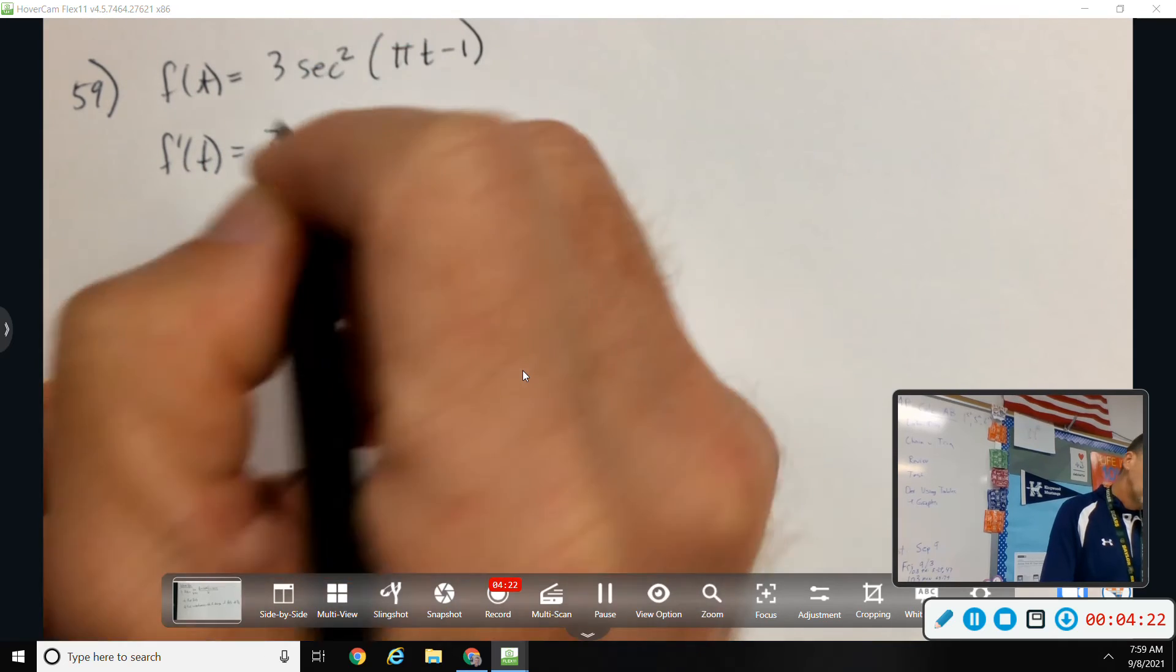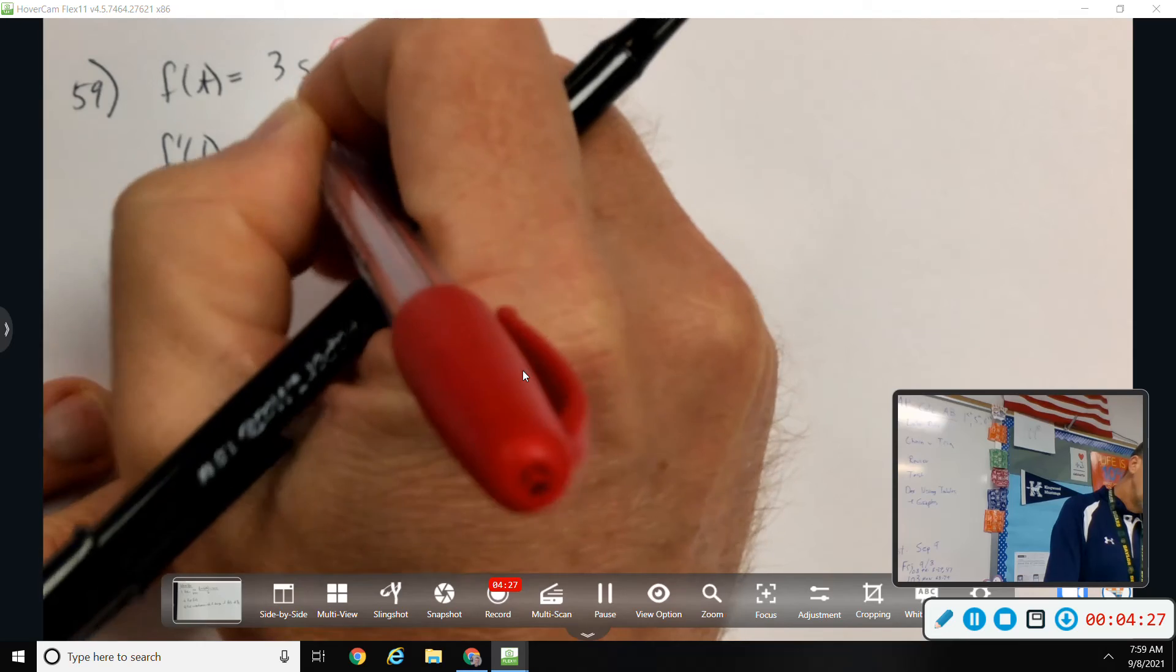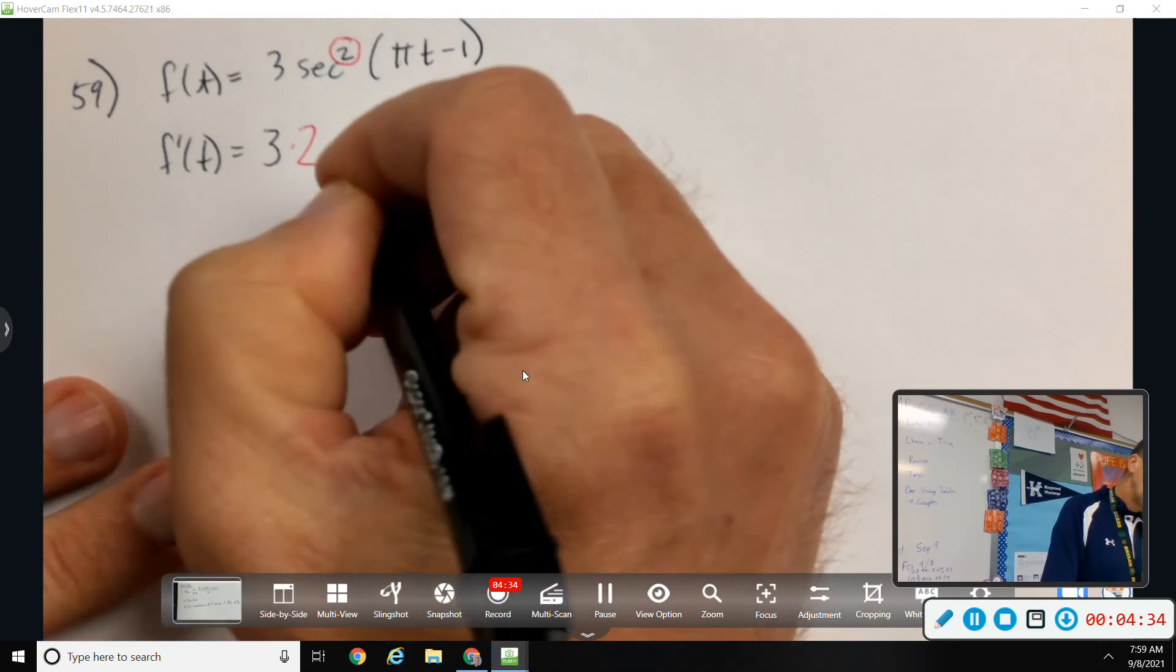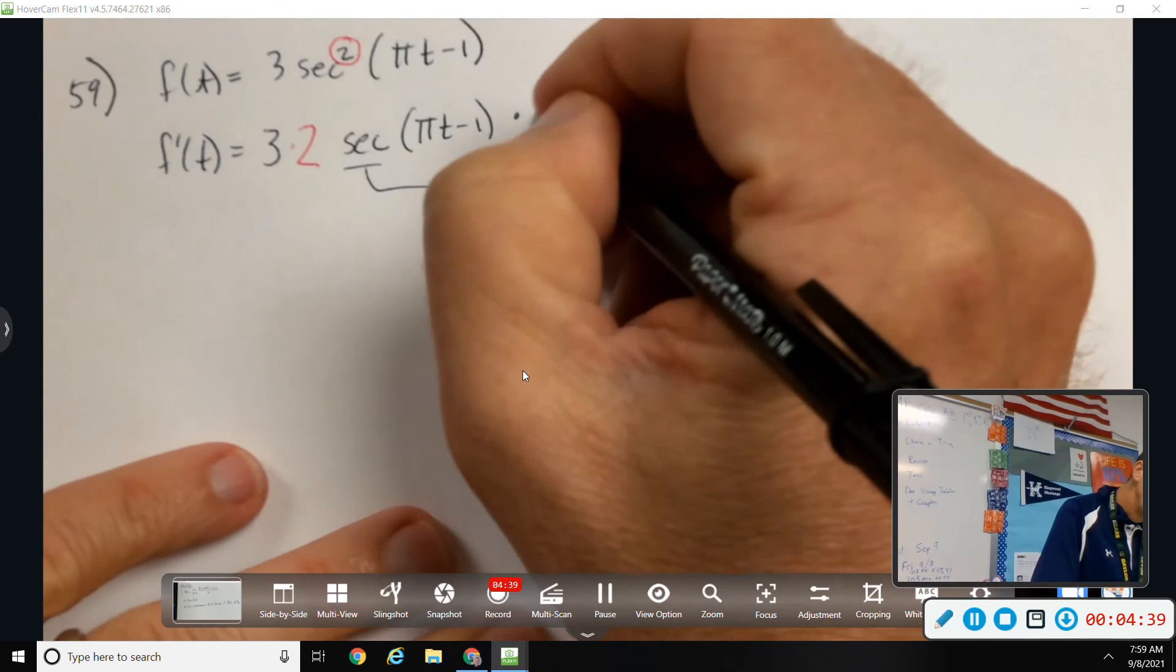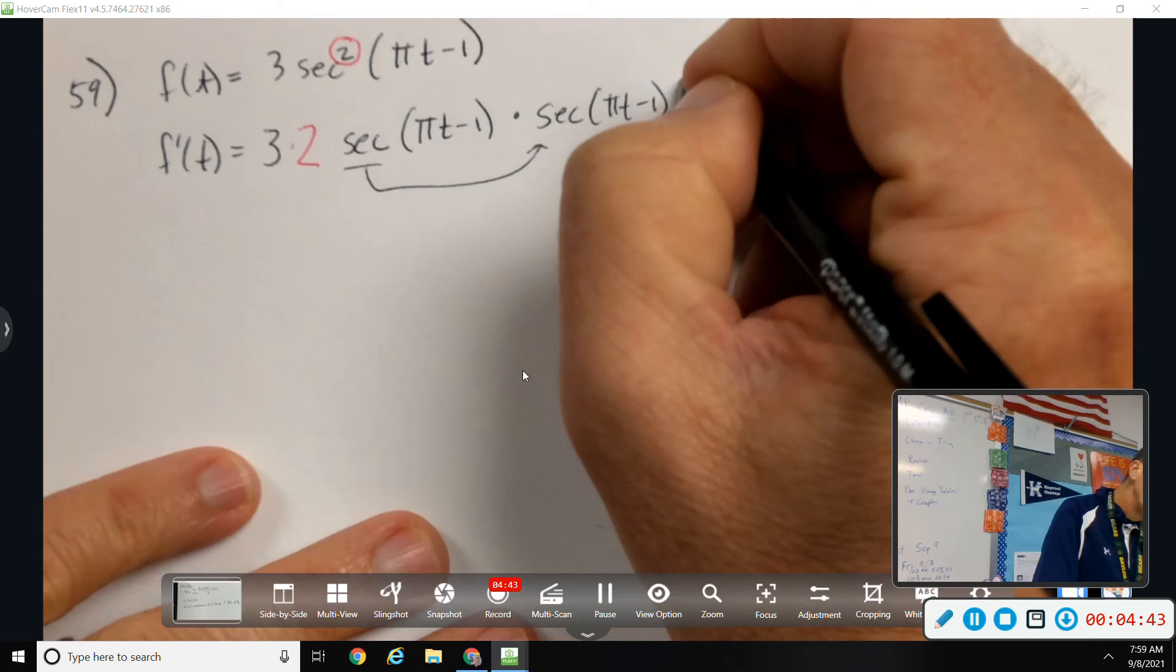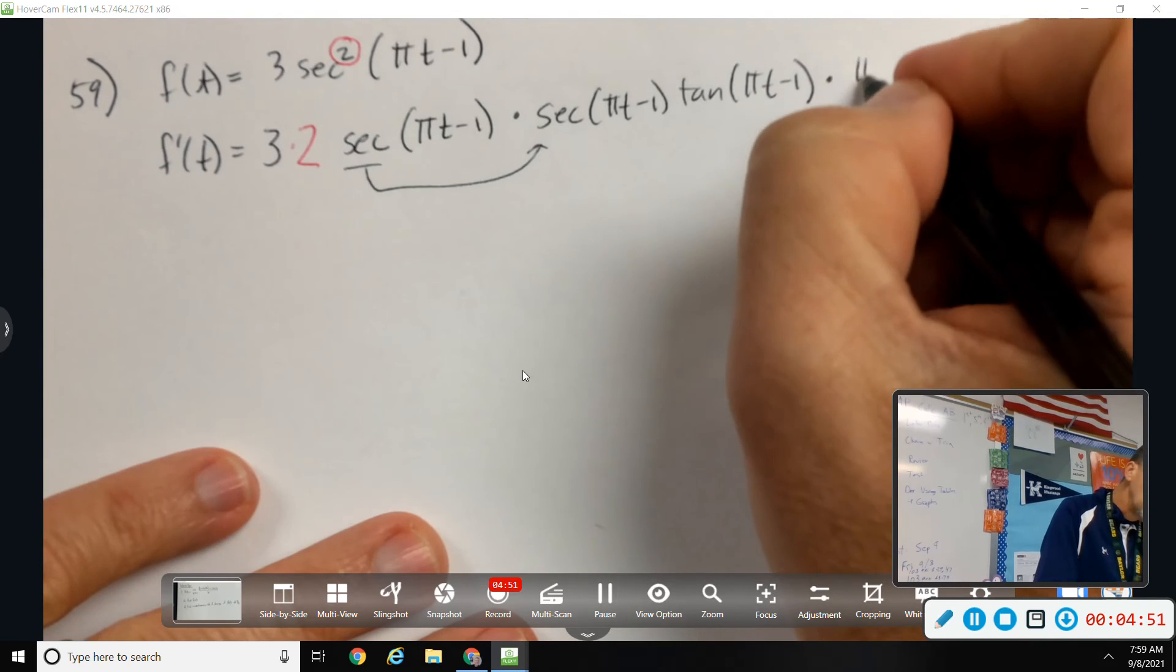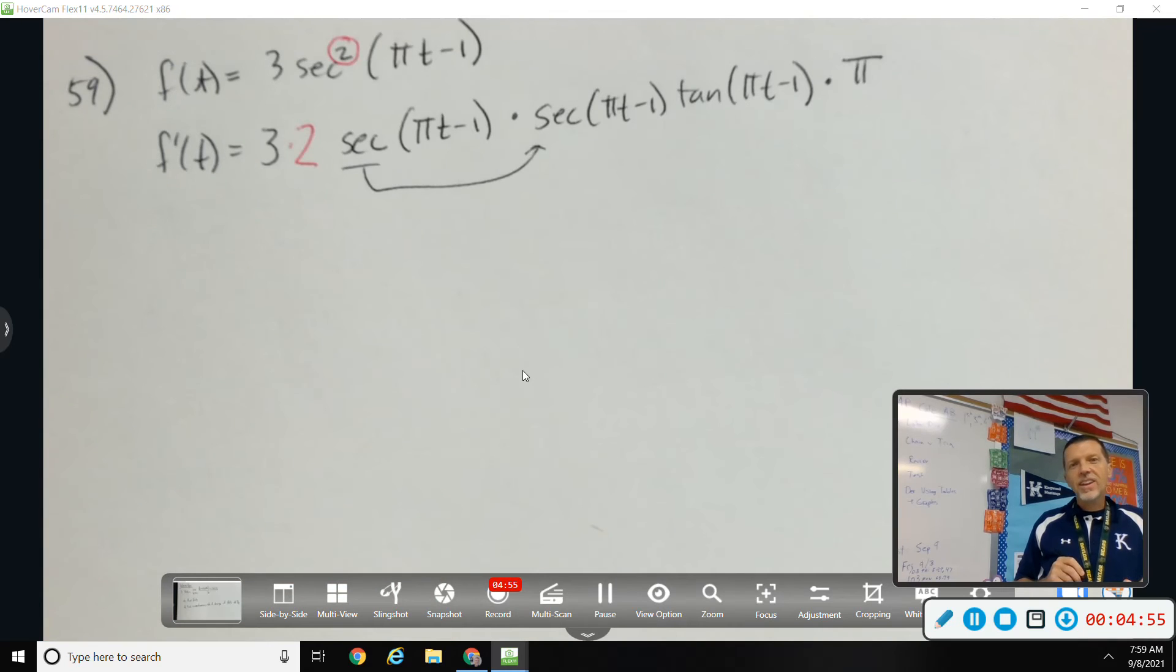F prime of t, 3 goes along for the ride. Chain rule stuff going on here. So, the 2, so power rule, 2 times secant, pi t minus 1. Derivative of secant is secant tangent. So, secant pi t minus 1, tangent pi t minus 1. And then, derivative of pi t minus 1 would be pi. So, I think we've strung it all together. That's a safe stop.